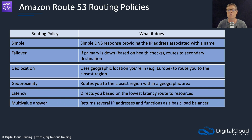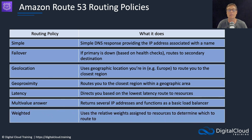Multi-value answer will return several IP addresses and functions as a very basic load balancer. Finally, we have weighted routing. With a weighted routing policy, we assign relative weights — for example, 80% of clients sent to one resource and 20% to another. This is useful for release testing: you can send a smaller portion of clients to a different endpoint and then gradually roll more traffic to it by assigning different weights.